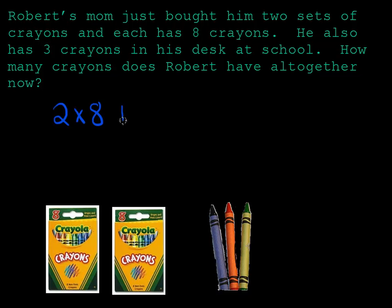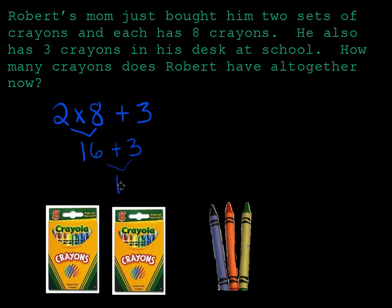But I also have three more crayons in his desk at school, which we'll have to add on. Now two times eight is sixteen. And if we add the three crayons in his desk at school, we can see that Robert has nineteen crayons all together.